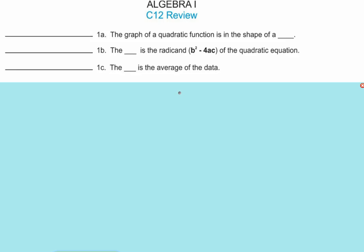As we review chapter 12, do 1A through C. You can do them without looking in your notes — great. If you've got to look in your notes, go ahead, but you'll probably run out of time.